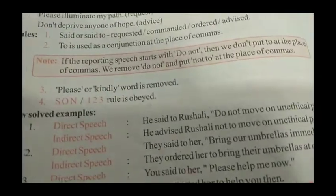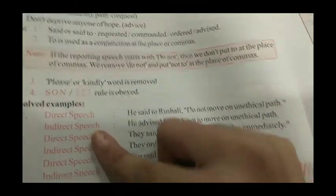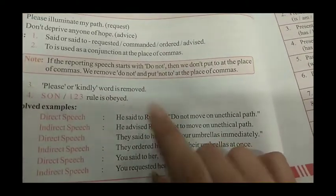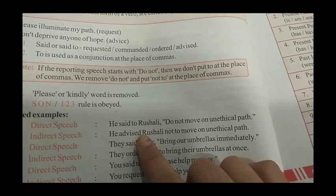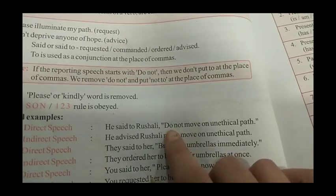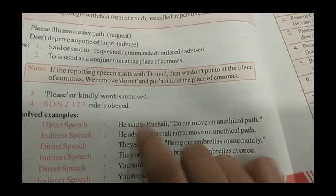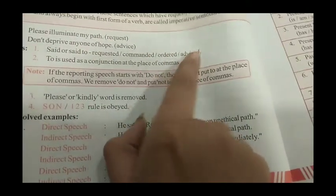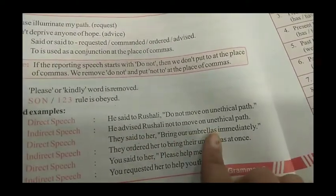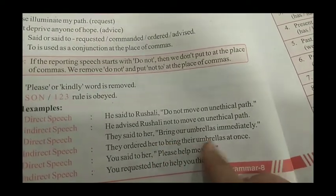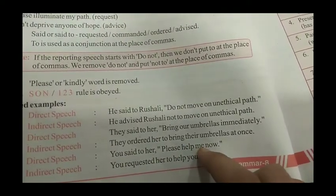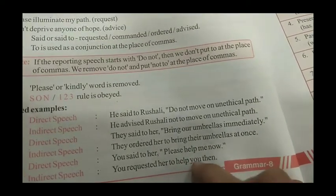Now we will study a few examples. Direct speech: 'He said to Roshali, do not move on unethical path.' Indirect speech: 'He advised Roshali not to move on unethical path.' तो यहाँ comma हट गया, not to आ गया, और said की जगह advised आ गया। Direct speech: 'They said to her, bring our umbrellas immediately.' Indirect: 'They ordered her to bring their umbrellas at once.' Direct: 'You said to her, please help me now.' Indirect: 'You requested her to help you then.'